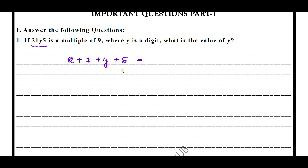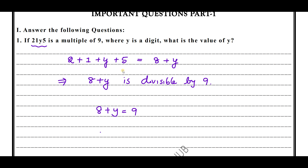Now we find: 2 plus 1 is 3, and 3 plus 5 is 8, so we have 8 plus y. Now, 8 plus y must be divisible by 9. That means 8 plus y equals 9. Therefore y equals 9 minus 8. Therefore y equals 1. The value of y is 1.